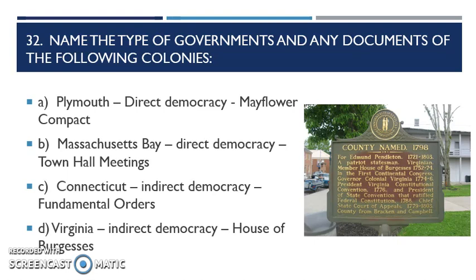Question 32: name the type of governments and any documents of the following colonies. We talked about Plymouth and the Pilgrims. The Pilgrims created the Mayflower Compact as they came over, and it's a direct democracy — one man, one vote. The Massachusetts Bay Colony, that's our Puritans, and they're also going to have a direct democracy with one man, one vote, done in town hall meetings. How the Pilgrims actually do their voting is in town meetings — the Mayflower Compact set up that they'd all come together, agree on what's best for the colony, and vote that way.